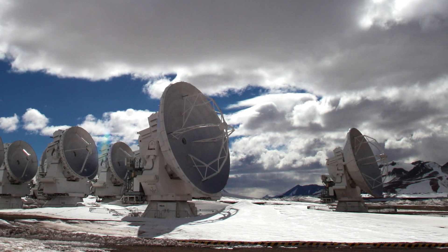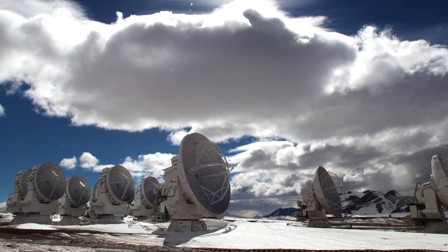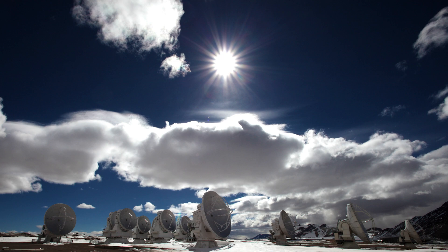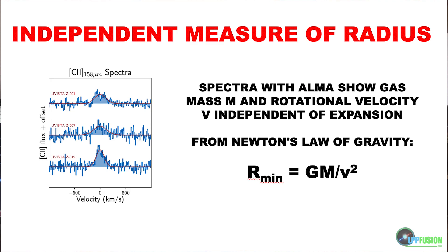That is going to have to be worked out. But the news gets worse for the Big Bang, because it isn't just data from the JWST that's causing the problem. Almost every day there's data from other telescopes making these problems worse. Starting in June of this year, there was data from Earth-based telescopes called ALMA — a huge array of radio telescopes in the Atacama Desert in Chile — that showed an independent measure of radius that contradicts the predictions of the Big Bang.